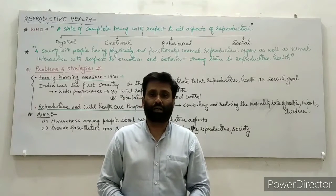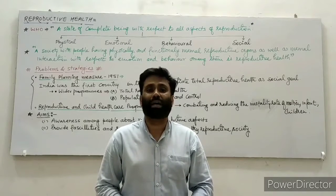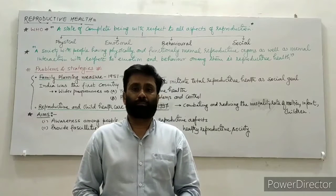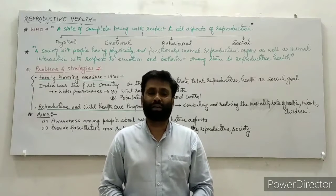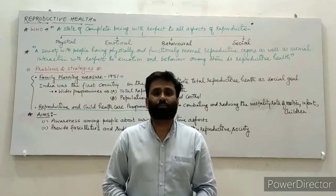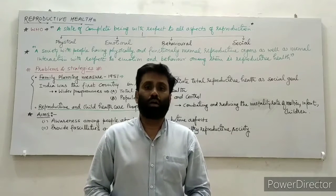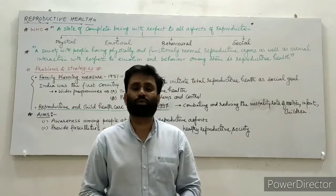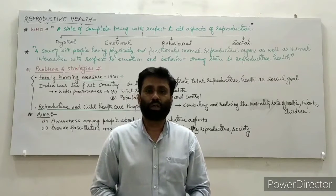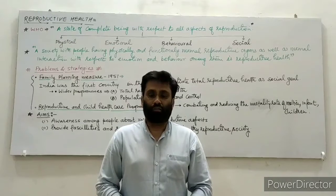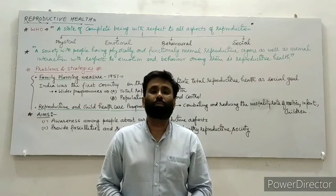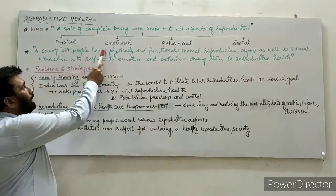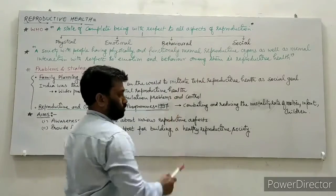We need to be aware of our reproductive aspects. What are reproductive aspects? We have already studied Chapter 3: Reproduction in Human Beings. We know what aspects, aims, and goals are achieved through reproduction. Reproduction also involves four different aspects: physical, emotional, behavioral, and social.